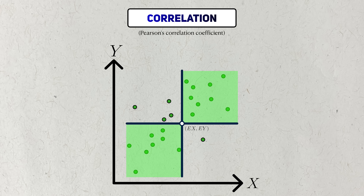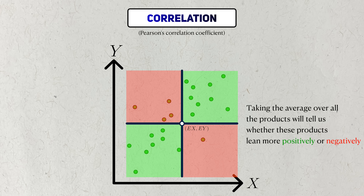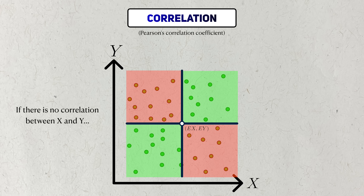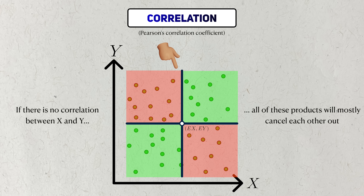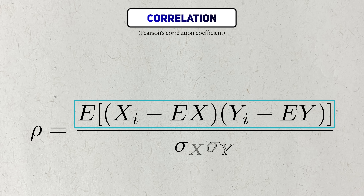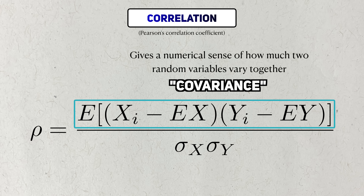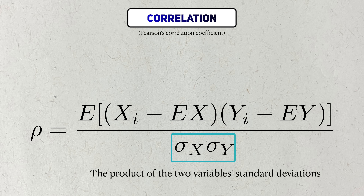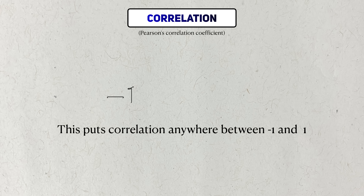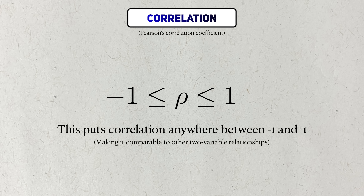Points in this region will produce positive products, while points in these quadrants will make negative products. By taking the average of all these products, we can get a sense of whether the two variables tend to vary more positively or negatively together. If there's a similar number of products with similar magnitudes in all quadrants, taking their average cancels everything out — visually giving us a diffuse plot. This expectation in the numerator is called the covariance, and it tells us how much two variables vary from their respective means together. The denominator contains the product of the standard deviations, standardizing the covariance to be between -1 and +1 on a common scale.